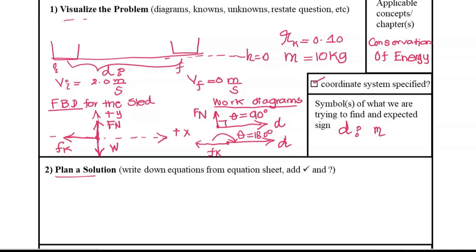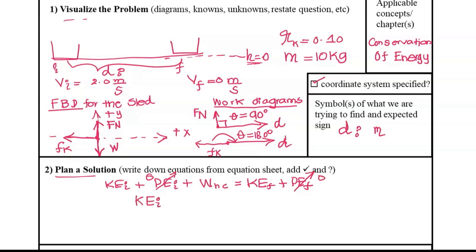First, we identify the equations. We'll use the conservation of energy equation: initial kinetic energy plus initial potential energy plus work done by non-conservative forces equals final kinetic energy plus final potential energy. Both initial and final potential energy are zero because the sled moves at the height-equals-zero level. Initial kinetic energy is not zero, and we leave the equation as: KE initial plus W non-conservative equals KE final.